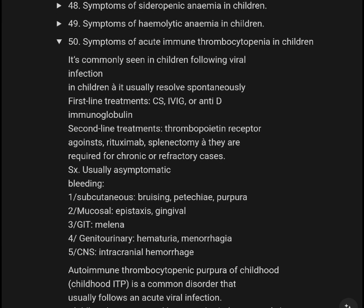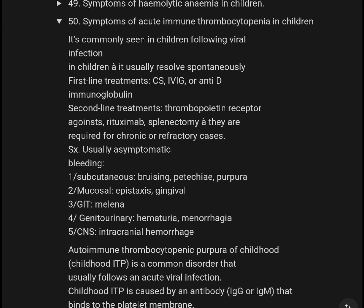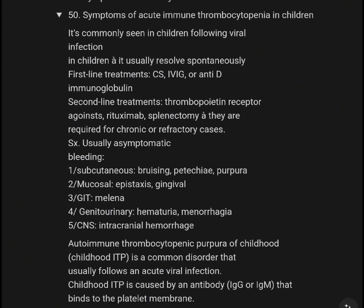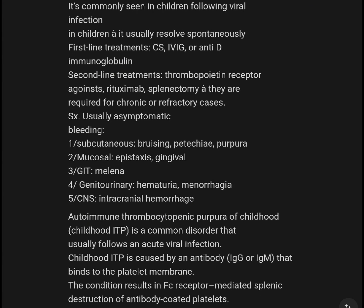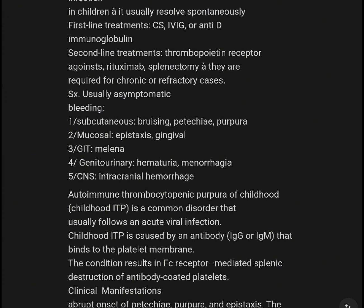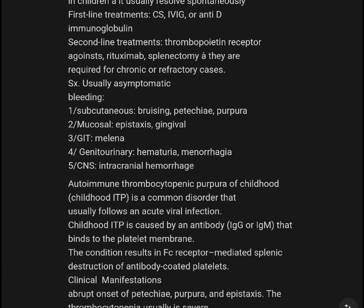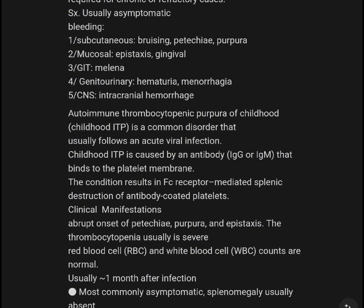Immune thrombocytopenia (ITP) in children is commonly seen following viral infection. In children, it usually resolves spontaneously. Treatment options include corticosteroids, IVIG, anti-D immunoglobulin, and thrombopoietin receptor agonists. Splenectomy may be required for chronic or refractory cases.